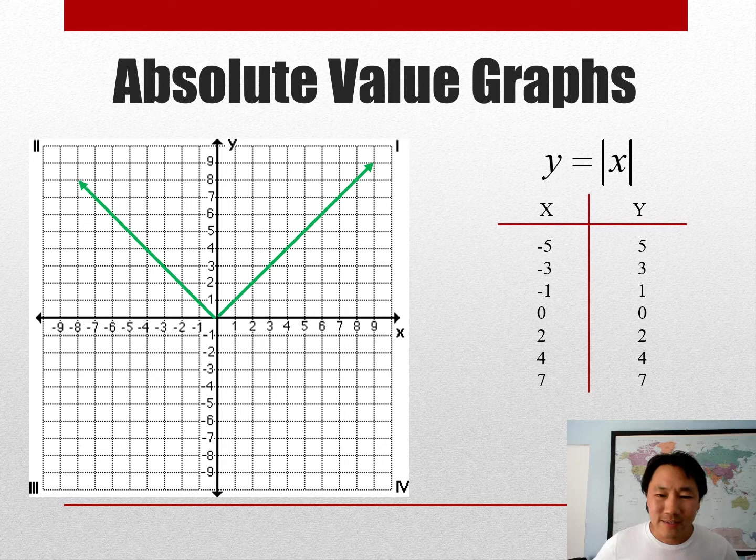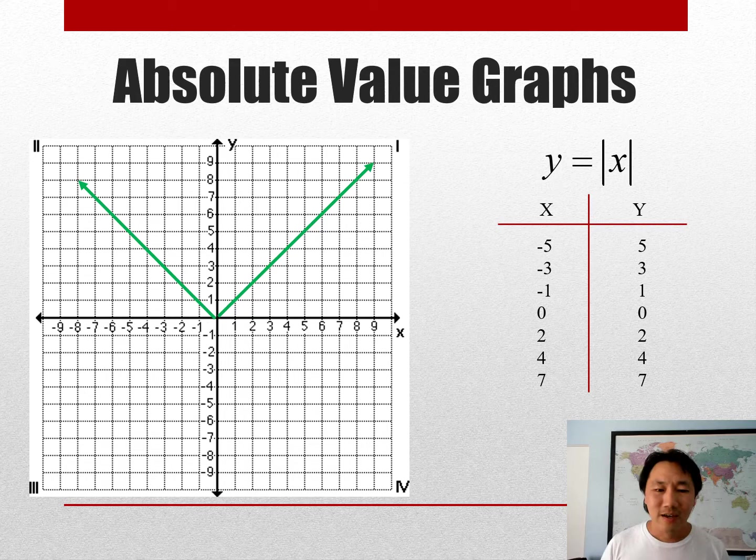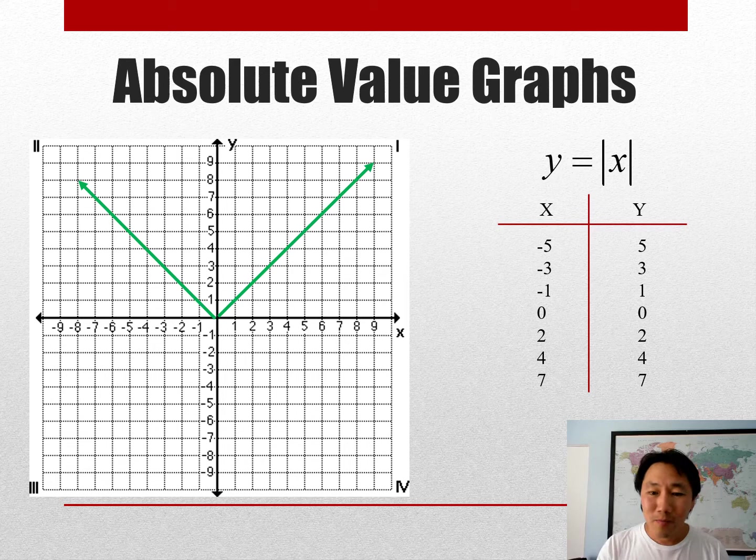Notice it doesn't curve like a parabola does. It actually has a corner, a real vertex with a V shape there at zero zero, and then they are straight lines that go up. So this is literally a letter V.